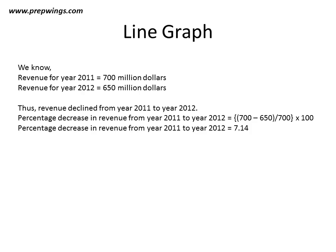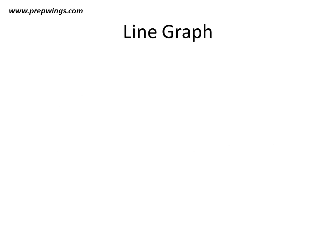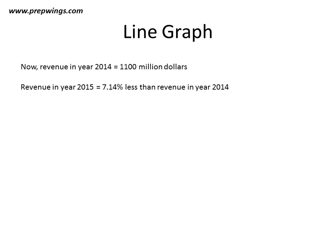The percentage decrease in revenue will be: 700 minus 650, divided by 700, into 100. The percentage decrease in revenue from 2011 to 2012 is 7.14 percent. Thus there was a decrease of 7.14 percent in revenue from year 2011 to year 2012. Revenue in year 2014 is equal to 1100 million dollars.